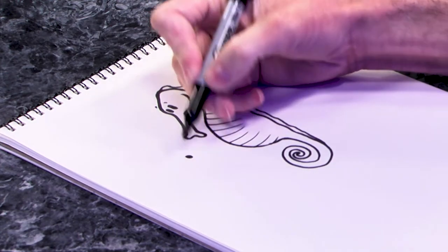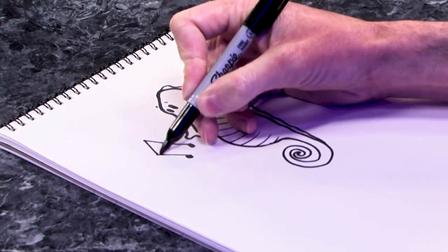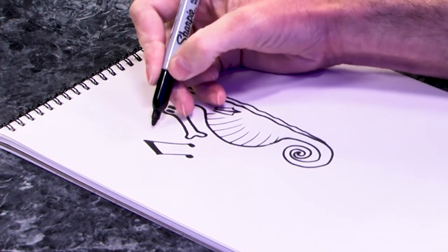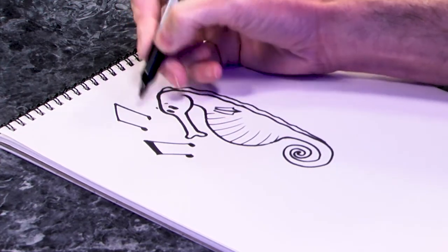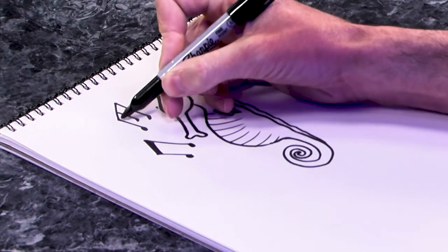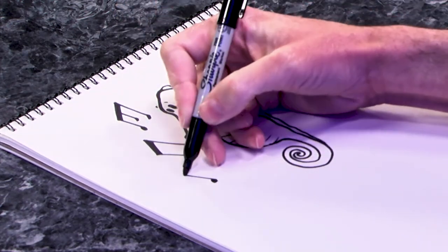And my guy with his giant snout is going to be playing his seahorse trumpet. Because they have to be able to do something cool with that big mouth.